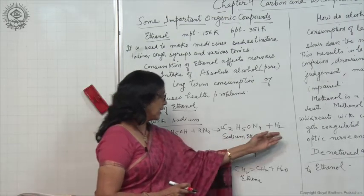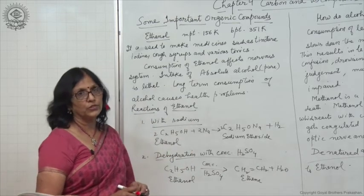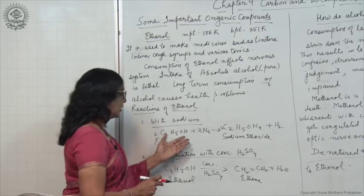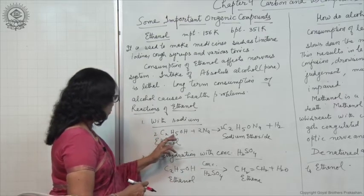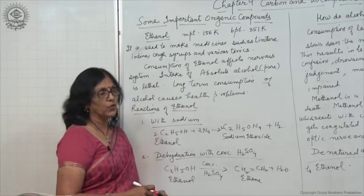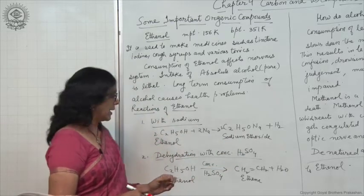When sodium metal is put in a test tube containing alcohol, immediately a reaction occurs and hydrogen gas is liberated. Hydrogen gas can be tested by bringing a burning matchstick near the mouth of the test tube. The gas burns with a pop sound. The balanced chemical equation: 2C2H5OH plus 2Na gives 2C2H5ONa plus H2. This compound is called sodium ethoxide.